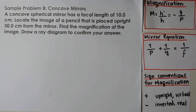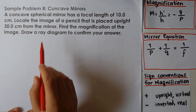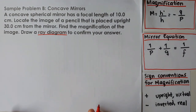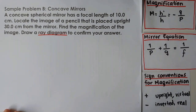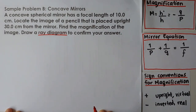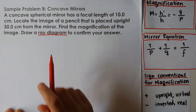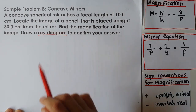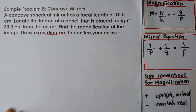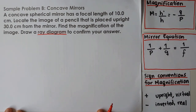Now we have another problem in which a ray diagram is requested. A concave spherical mirror has a focal length of 10 centimeters. Locate the image of a pencil that is placed upright 30 centimeters from the mirror. Find the magnification of the image. Draw a ray diagram to confirm your answer. I'll work the equations first and then explain the ray diagram after.